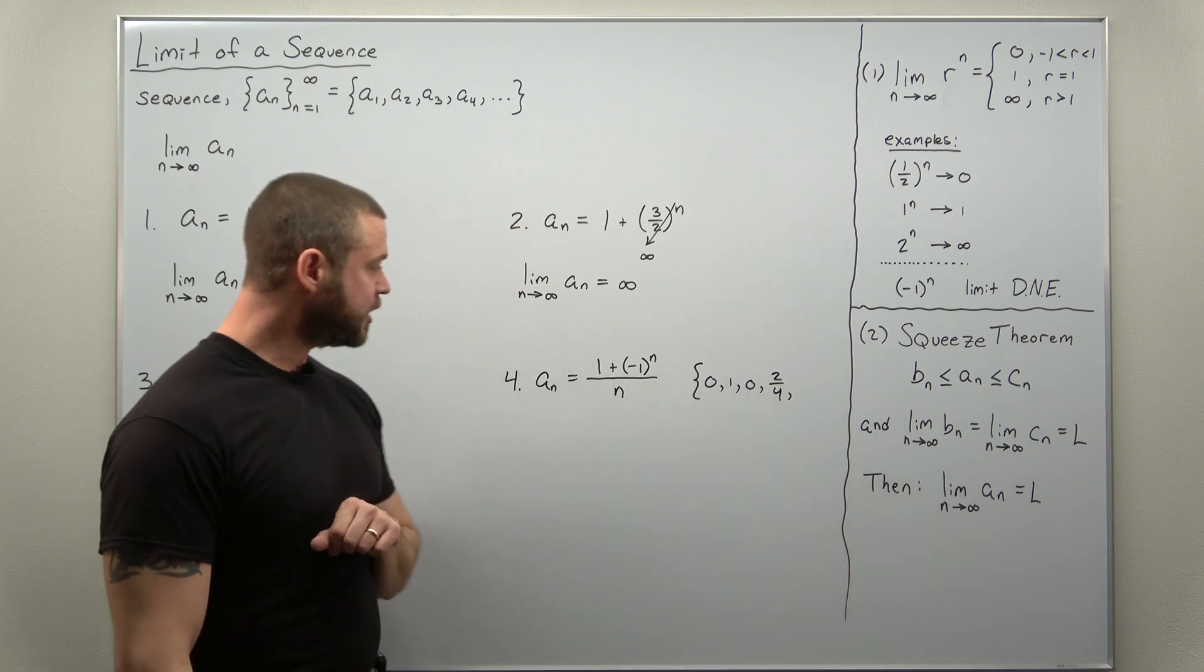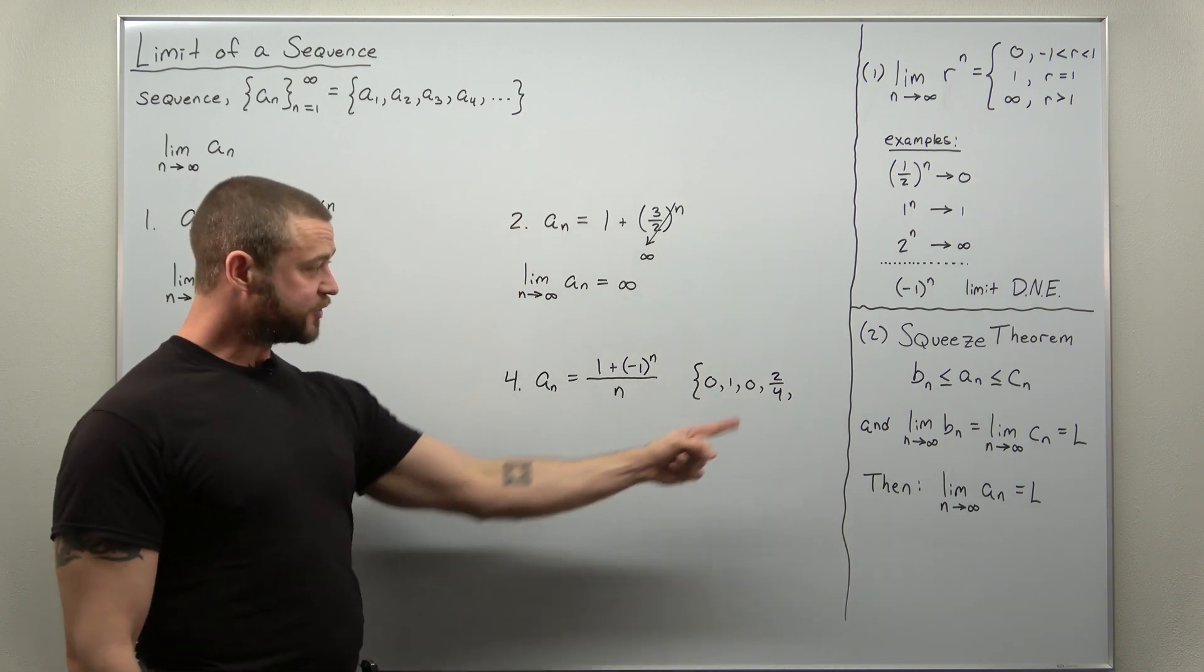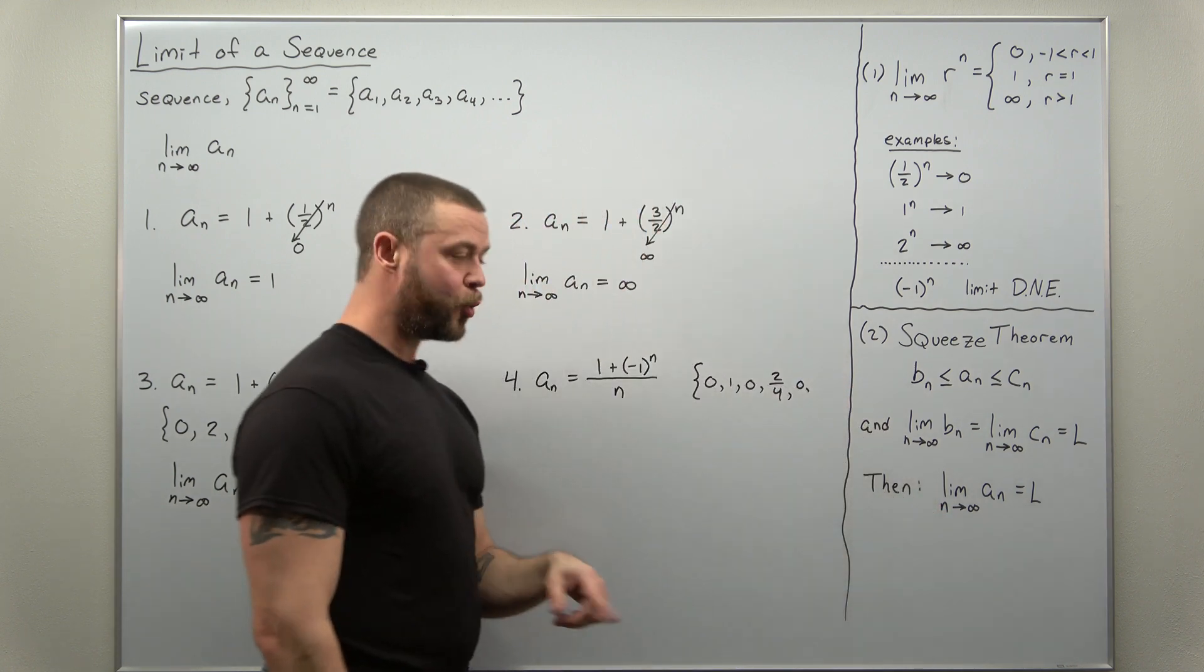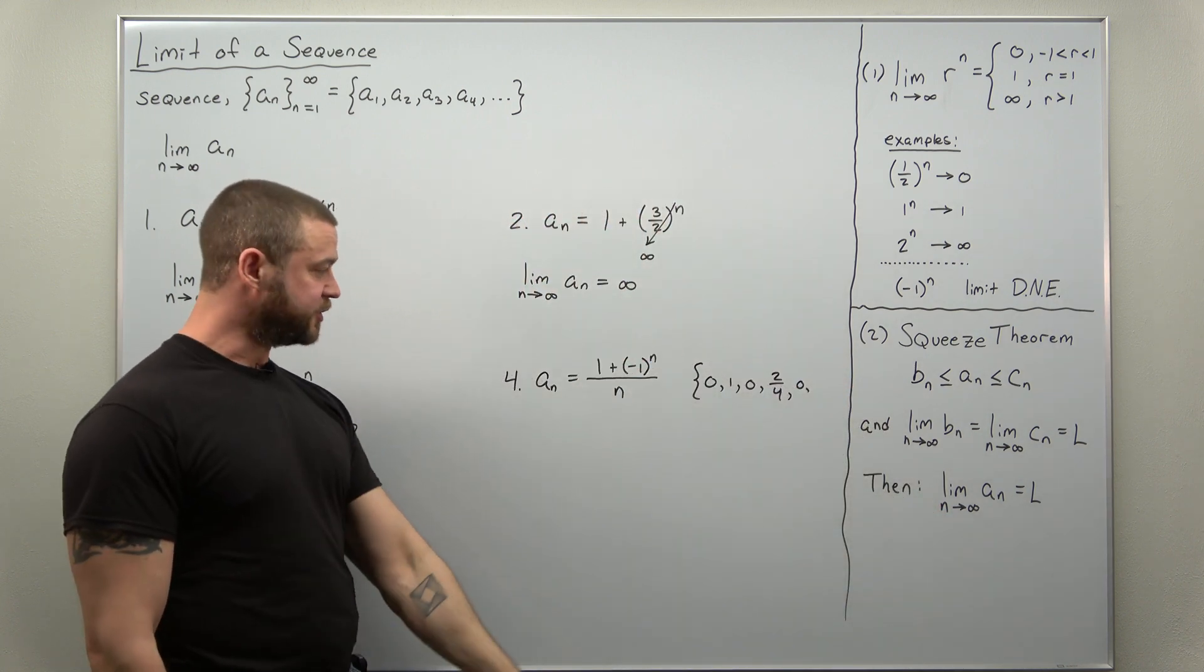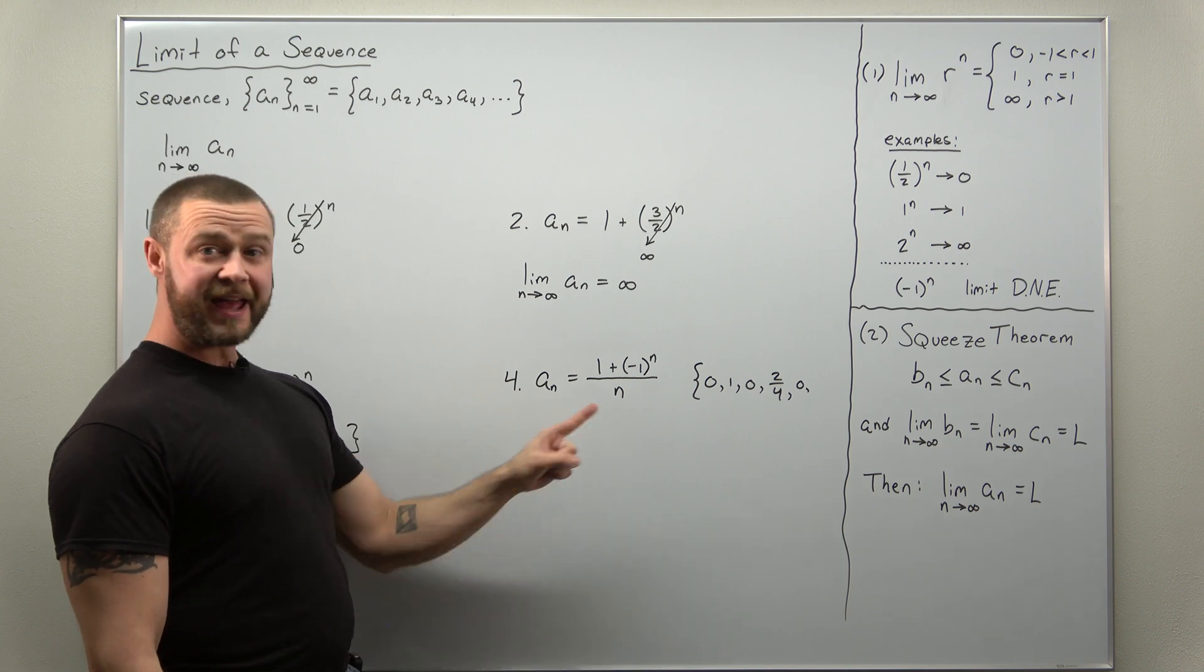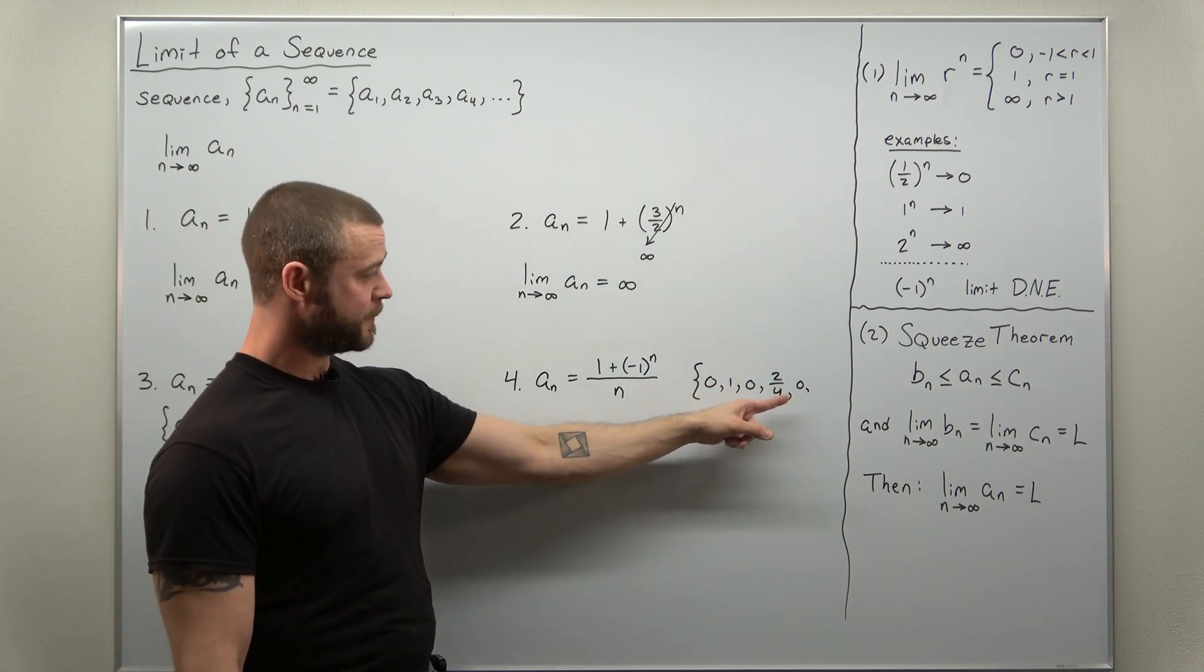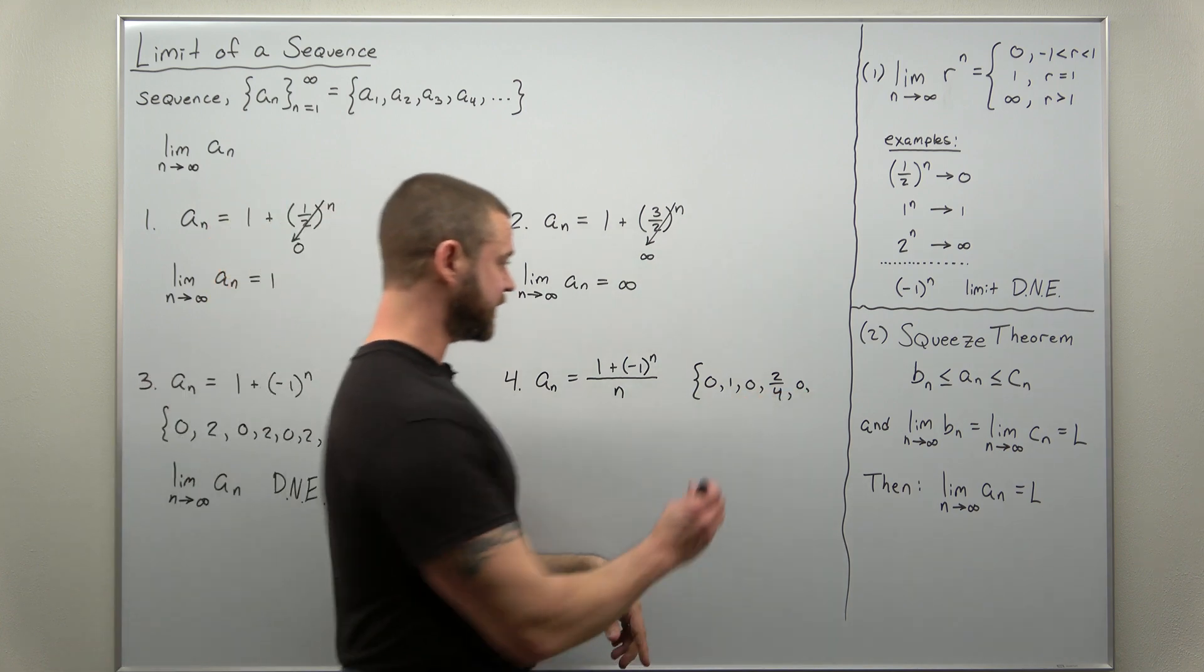And you can probably see what's going to happen here. The next term after that would be zero. And let's write one more. The numerator goes back to two, but now this is the case, and I have to count here. This is n equals one, two, three, four, five, six. Now we'll get two over six.